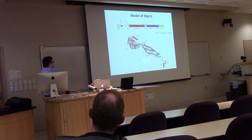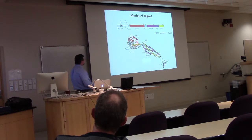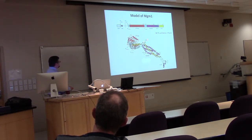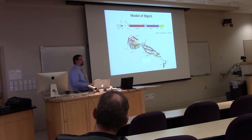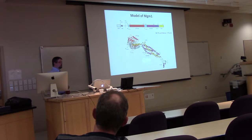The MGM1 model is very similar to dynamin-1 since that's the template: a globular GTPase domain, a bundle signaling element, the GED and middle domain folded together to make a stalk. Instead of a PH domain, there's a variable region that we have isolated and confirmed is responsible for the cardiolipin-dependent lipid association — so we know this is a good prediction of that domain.